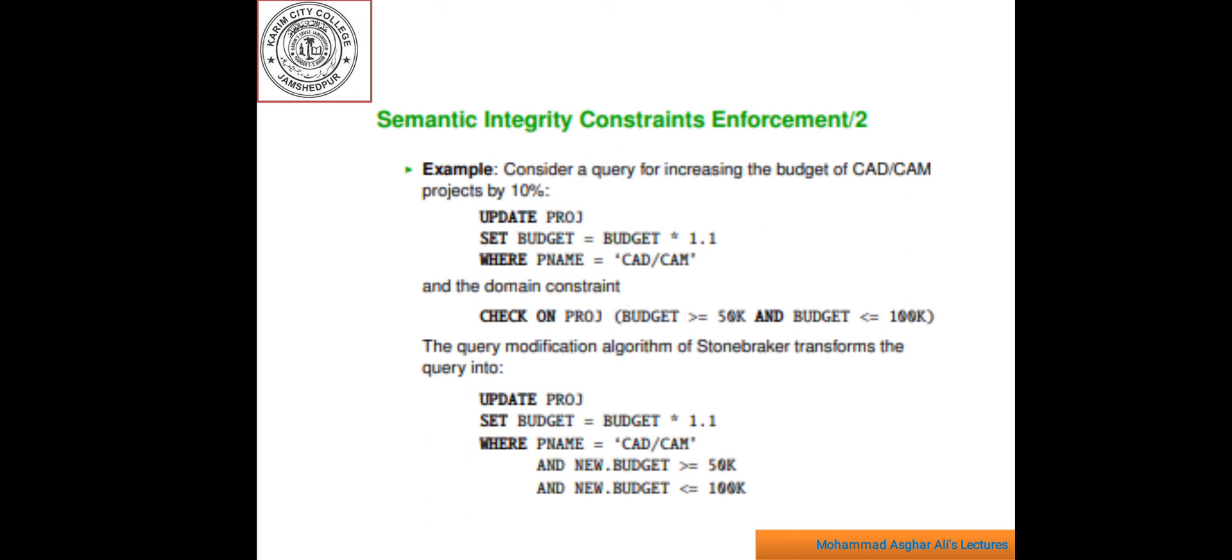For example, the query of increasing budget of CAD CAM project by 10% which would be specified as. You can write from this command. And the second, it will transfer this statement. It's transferred into the following quality query in order to enforce the domain constraint. Like update project set project budget equal to budget into 1.8 where prime equal to P name equal to CAD CAM and condition which is given above. The query modification algorithm which is well known for its elegance produce pretest at runtime by ending the assertion predicate which is the update predicate of each instruction of the transactions. So, by using this example we can check.